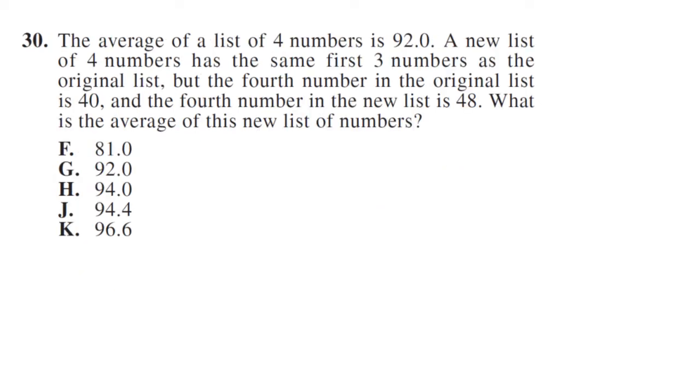The average of a list of four numbers is 92. So one, two, three, four numbers divided by four is 92. A new list of four numbers, one, two, three, four.